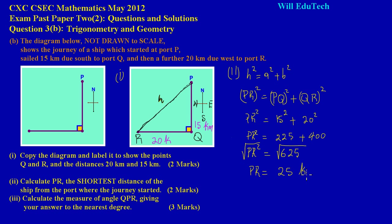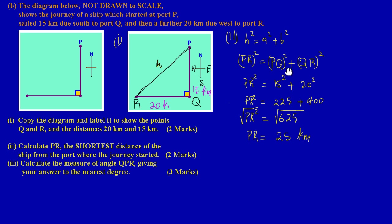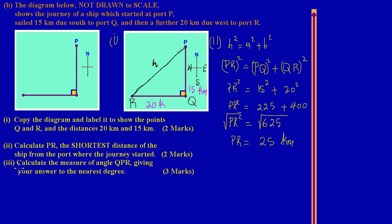That's another easy two marks. Now in Part 3, they're asking us to calculate the measure of angle QPR, giving our answer to the nearest degree — that's worth three marks. Let's identify the angle: the middle letter is P, so the angle is formed at point P.